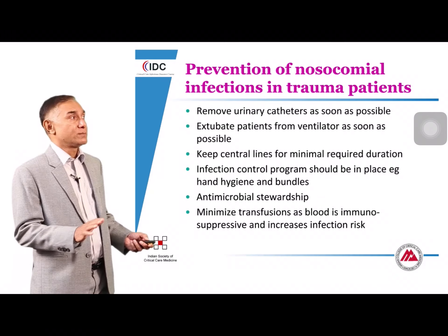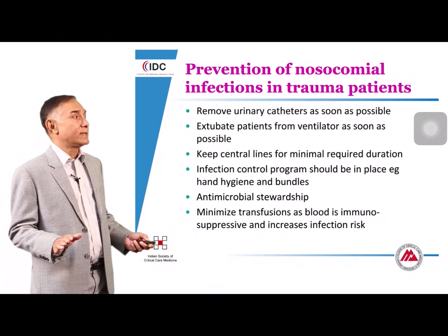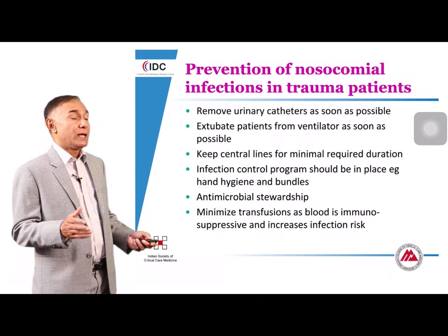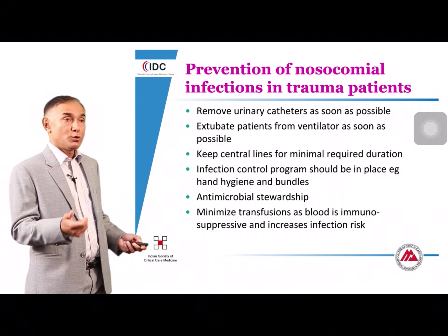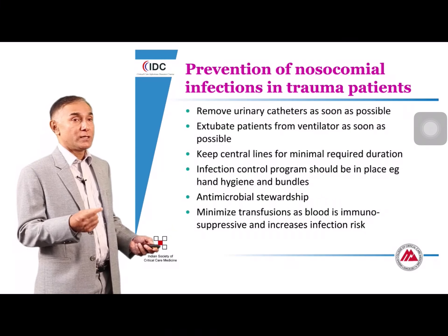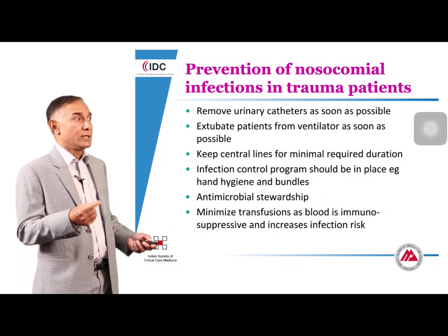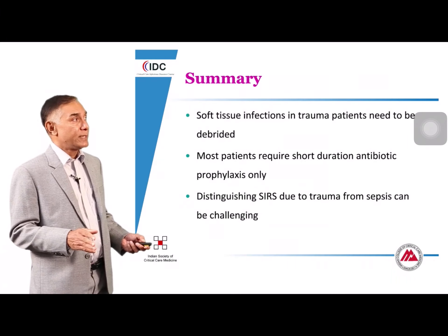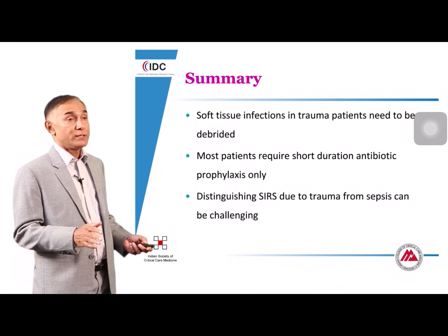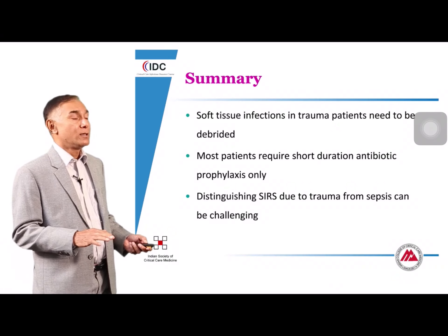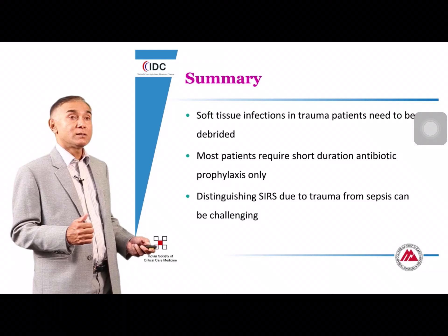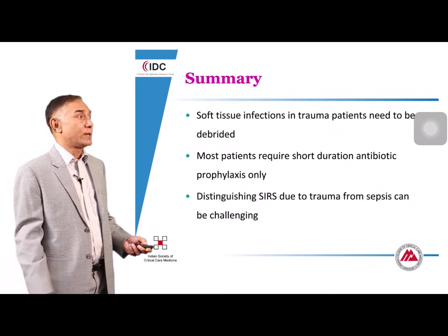To prevent infections in trauma patients: remove lines promptly, extubate early, remove the Foley catheter, keep central lines for the minimum required duration, maintain typical ICU bundles and stewardship, and minimize transfusions — each unit of blood transfused increases infection risk. In summary, traumatized patients should have soft tissue infections promptly debrided, most patients require short-duration narrow-spectrum antibiotic prophylaxis, and distinguishing SIRS from sepsis requires clinical judgment.